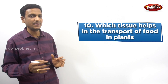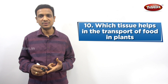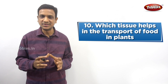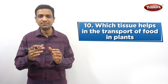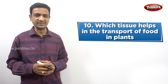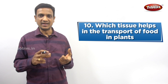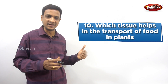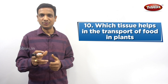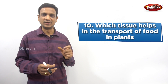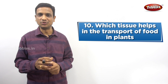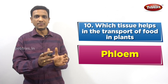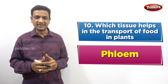The next question: which tissue helps in the transport of food in plants? Plants have a transport system, though not as complex as in animals. They have two specialized tissues for transport of materials - xylem and phloem, which we studied in Class 9. Out of these two, xylem is for transport of water, and phloem is for transport of food. So the answer is phloem.